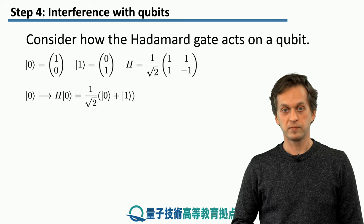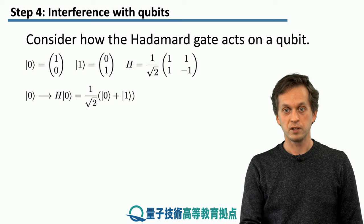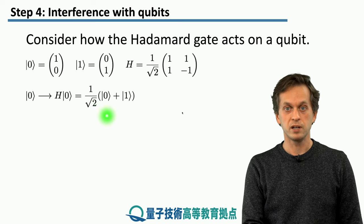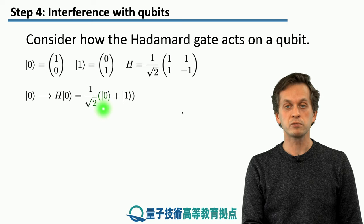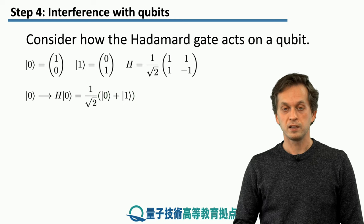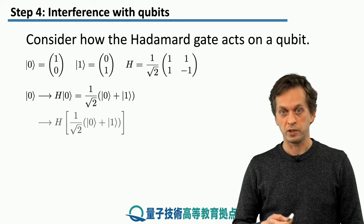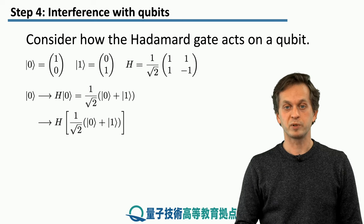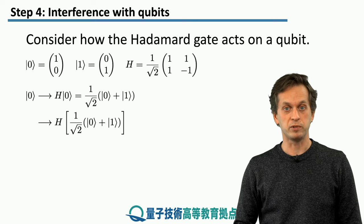If we start in the state 0 and apply the Hadamard gate to it, what we get, we have seen that already, is we create an equal superposition of state 0 and 1. Now we can do the same thing again. We can apply another Hadamard gate to this superposition, and see what actually happens.